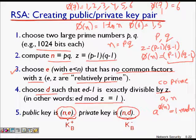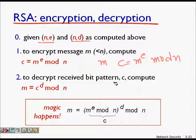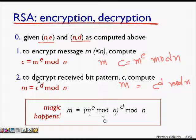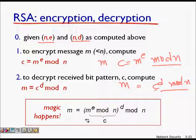To encrypt a message m (where m < n): compute c = m^e mod n. To decrypt: compute m = c^d mod n. The magic is that if c = m^e mod n, then c^d mod n recovers the original message m. This follows from the modular arithmetic properties and Euler's theorem we reviewed earlier.